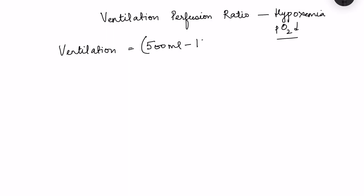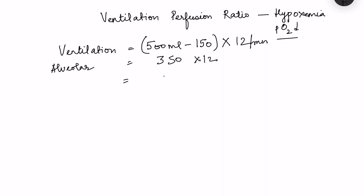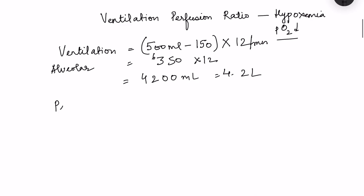Normal dead space volume is 150 ml, and we multiply by the respiratory rate — let us assume 12 per minute. So alveolar ventilation is (500 - 150) × 12 = 350 × 12 = 4,200 ml, that is 4.2 liters. That is the alveolar ventilation.